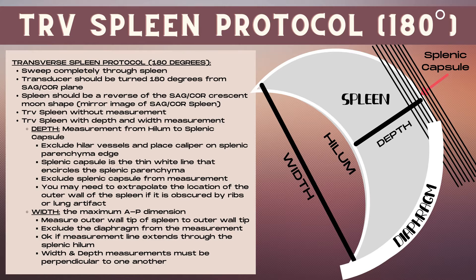Now let's talk about the transverse spleen protocol. Note that this is a plane that is 180 degrees opposite the sagittal or coronal splenic plane. Because it's not at a 90-degree angle it's not a true transverse plane, but we use this to get around the ribs. Sweep completely through the spleen first, and the spleen should look like a reverse crescent moon shape.